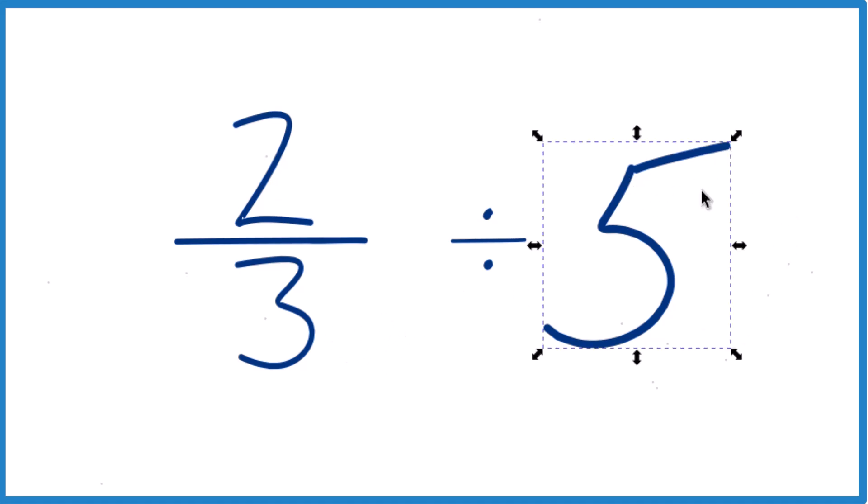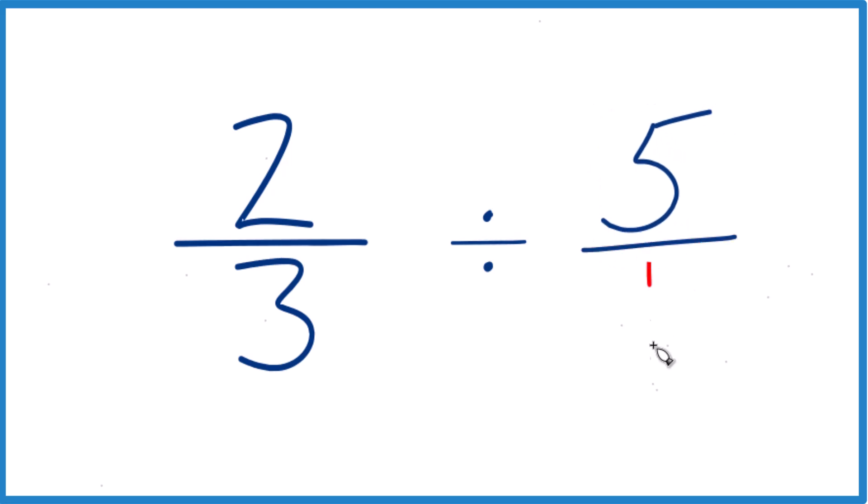Next, we're going to take 5 here. Instead of 5, we're going to call it 5/1. Because 5 divided by 1 is still 5, but everything's lined up now.